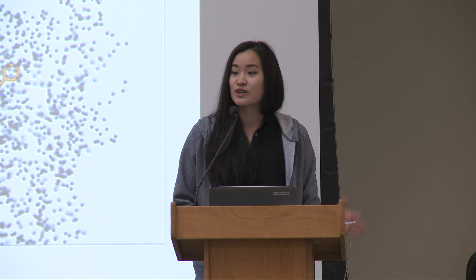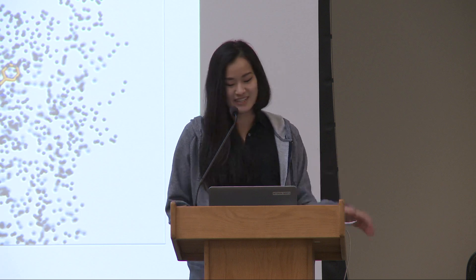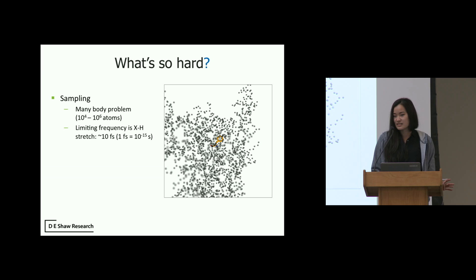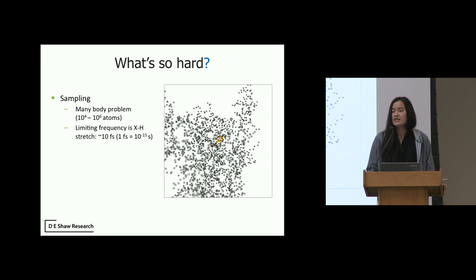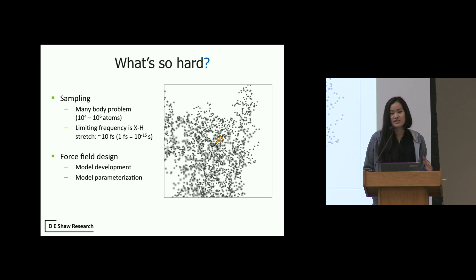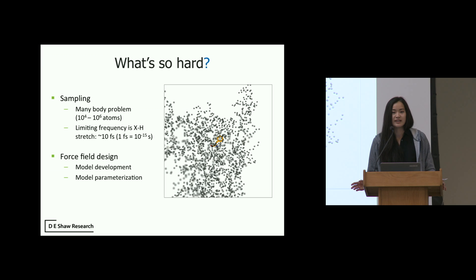What makes this problem really interesting? These problems fall under two general categories. The first is sampling: the systems we're looking at are tens of thousands to up to millions of atoms, so computing the forces on all these atoms is extremely computationally expensive, especially if we want to iterate up to timescales where we can actually see interesting chemistry happen. The second class of problems is the force field — the underlying model used to compute the forces acting on each atom. If this is not sufficiently accurate, then no matter how long we simulate, even in the limit of infinite sampling, we wouldn't get any useful information out of our simulations.